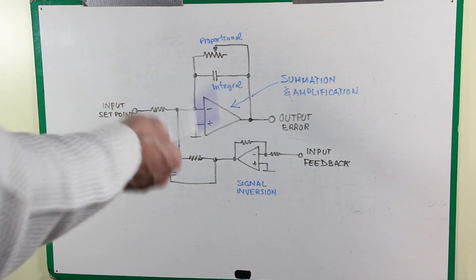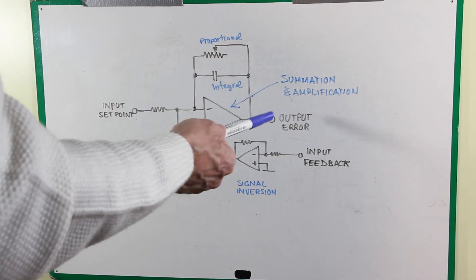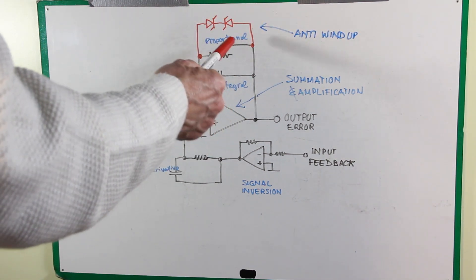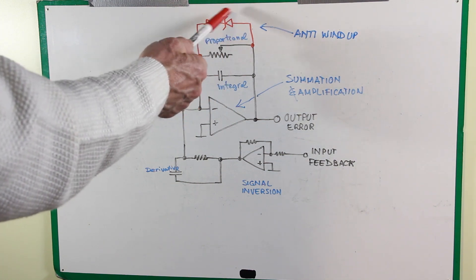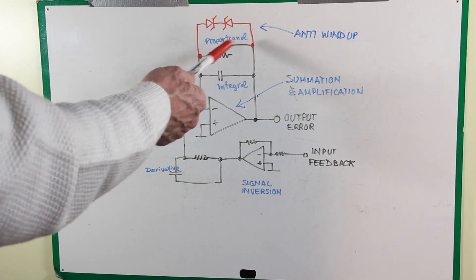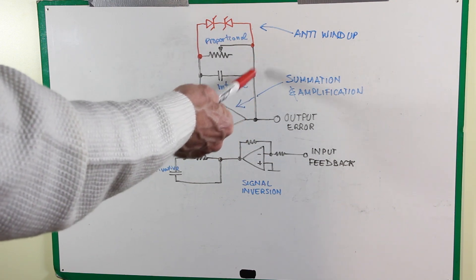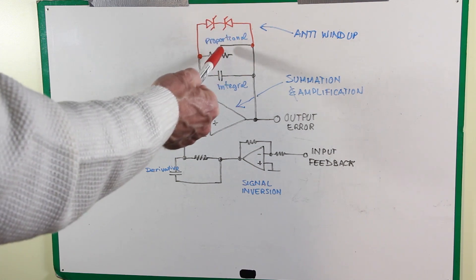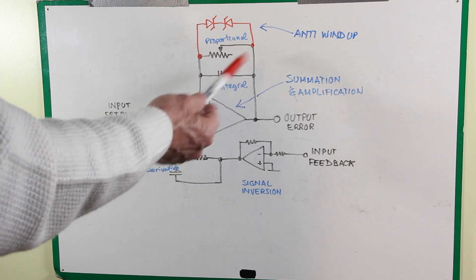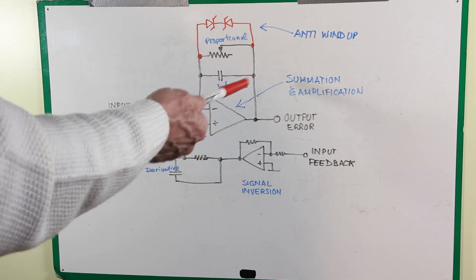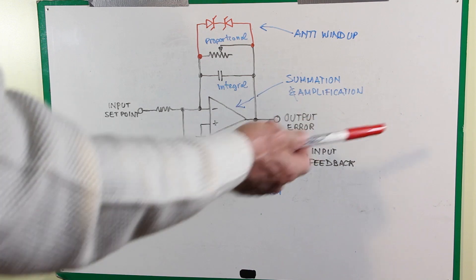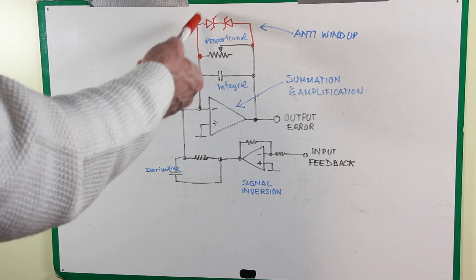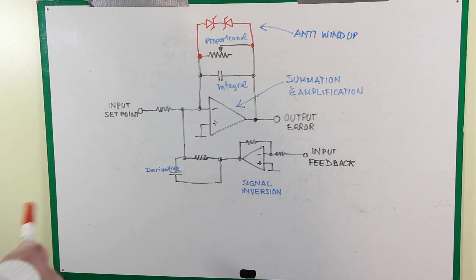To avoid this problem we can add detection for when the system is saturated, shutting down the integration when this happens. In the circuit we can translate this using a couple of Zener diodes in counter polarity. As soon as the error amplifier gets close to saturation, the Zener diode provides a path that bypasses the integrating capacitor. This is a proxy of the actual saturation of the power provided to the motor, so the Zener diode value should be adapted to match the limits of the motor's output power.